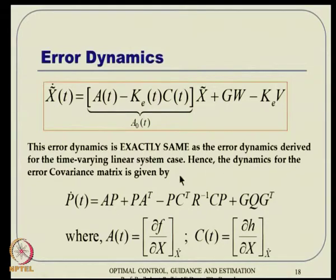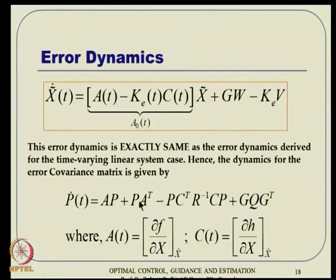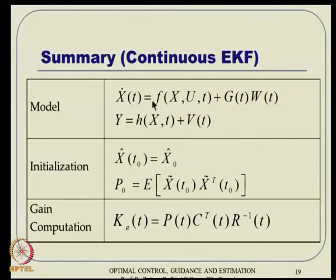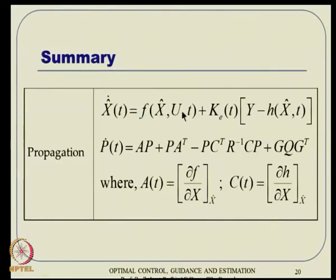The covariance matrix dynamics can be written directly from the linear time-varying case since the error dynamics is identical. The only difference is that A(t) and C(t) must be evaluated every time at the most updated value of x-hat. The summary of continuous-time EKF: initialize, compute gain, propagate x-hat using the filter dynamics and propagate P using the covariance matrix dynamics, always evaluating A and C around the current x-hat.